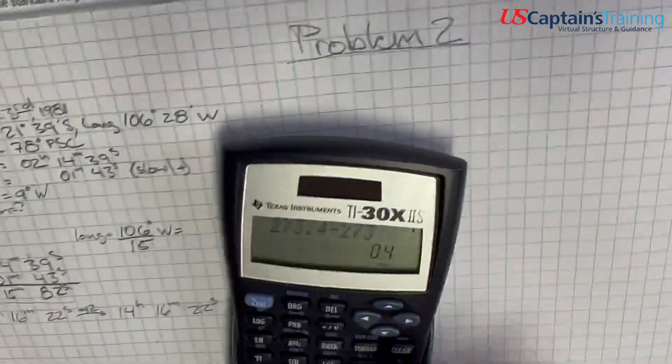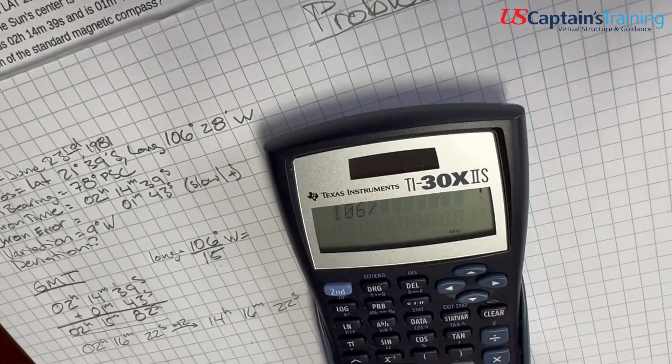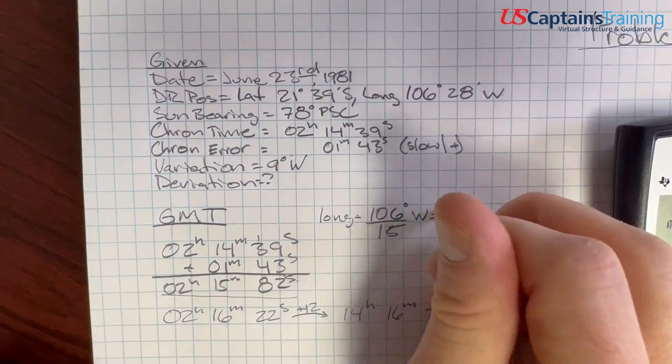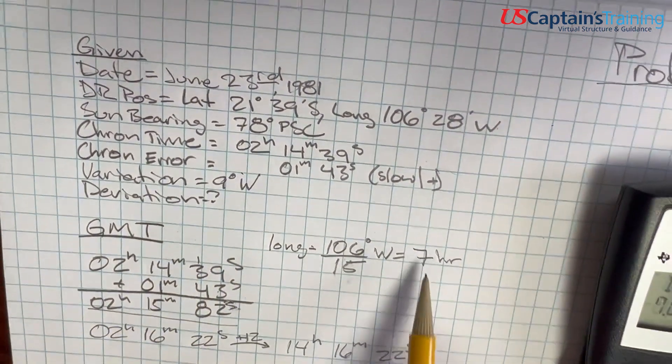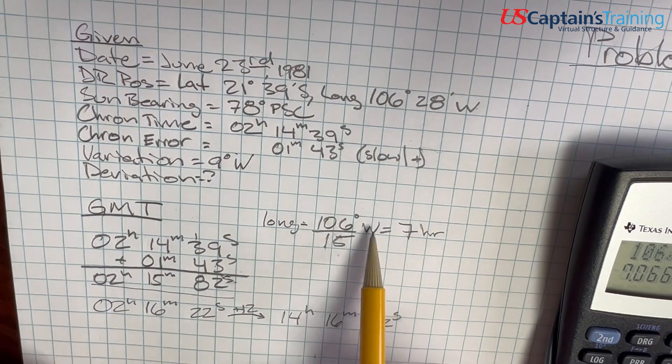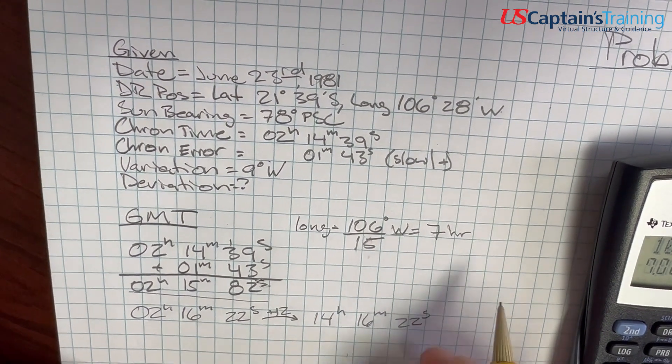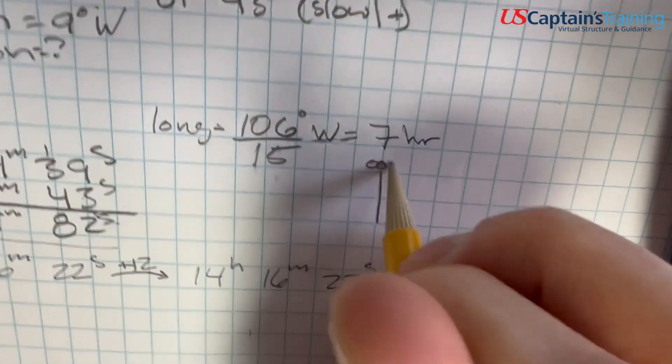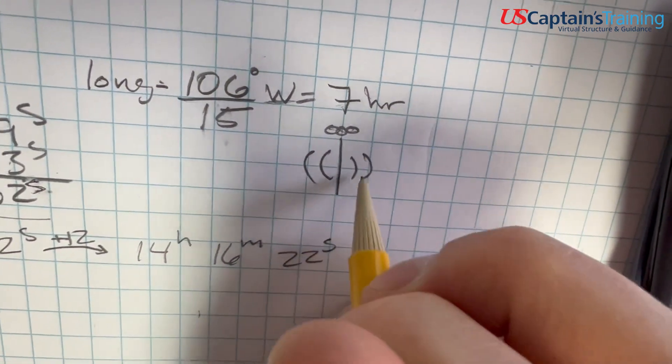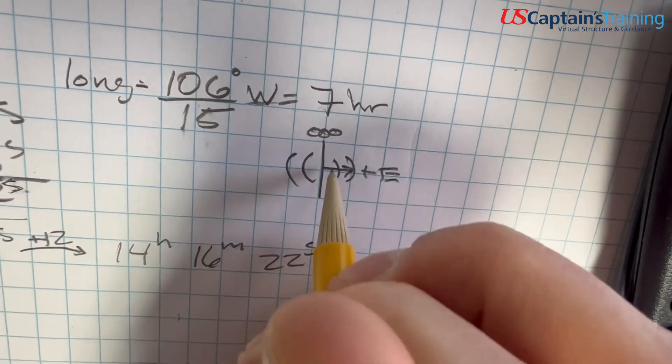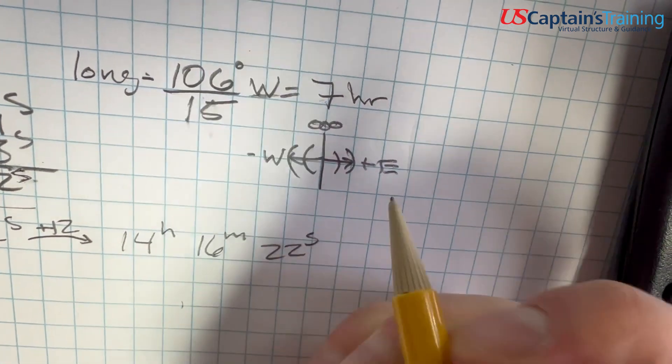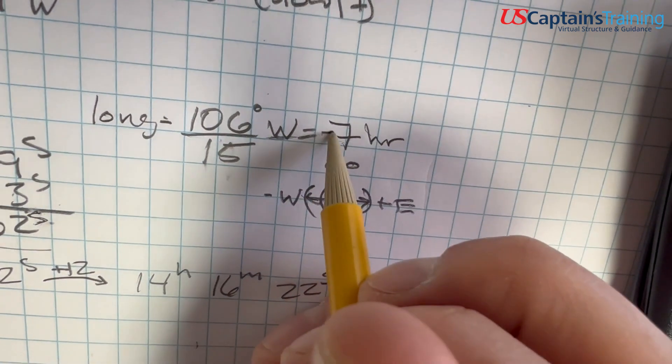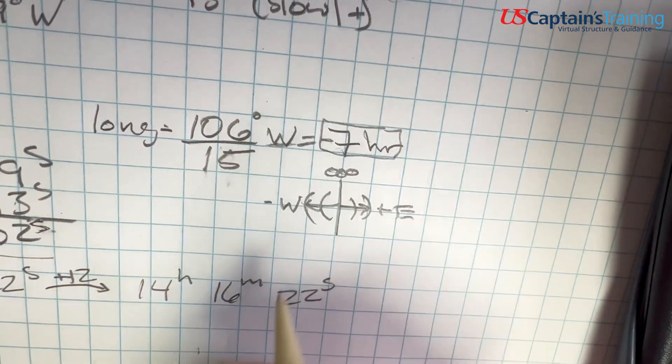We divide that by 15, because there's 15 degrees in a time zone. 106 divided by 15 equals 7.1, so we round it to seven hours. Now is this plus or minus? Well, west means we subtract. I can do a little graphic here to help show that. If this is zero, Greenwich time, these are time zones. You go to the east, you add. You go to the west, you subtract. Think about New York to California - you're to the west, you're subtracting. So these seven hours will be subtracted. This is our zone correction.